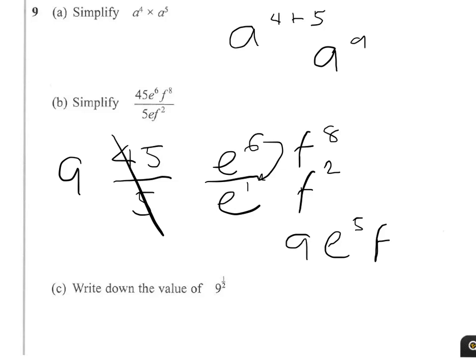And using the same method, 8 take 2 is 6. So the simplification gives us 9e to the power 5, f to the power 6.